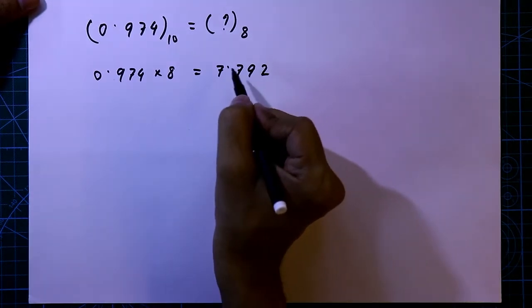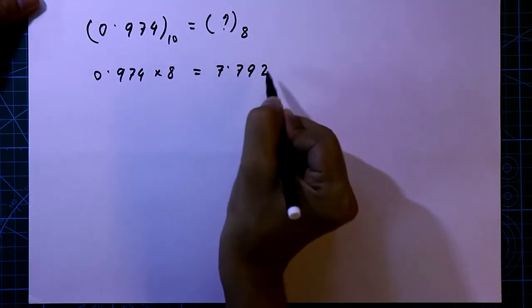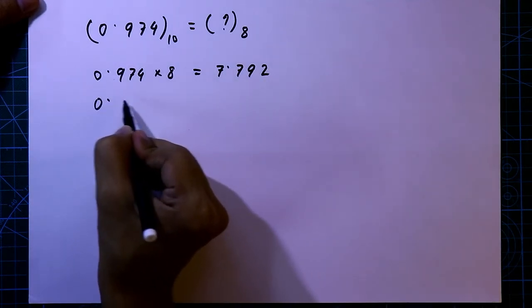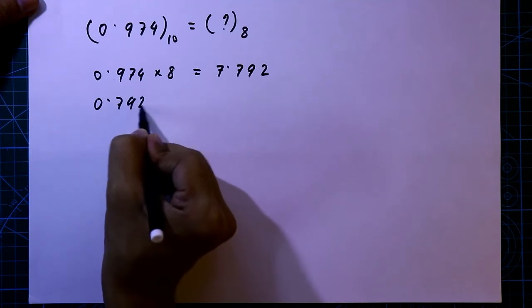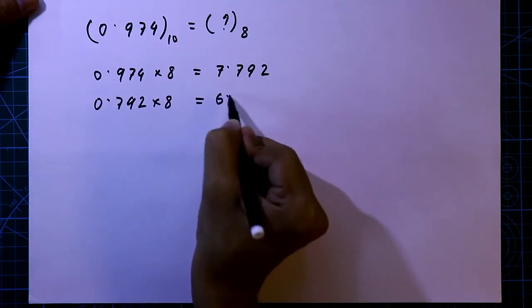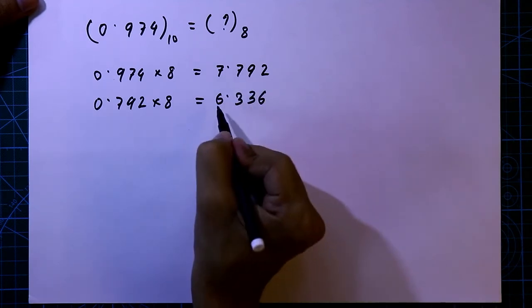Now ignoring the integer part, we will take 0.792. So 0.792 multiplied by 8, it is 6.336. Now again ignoring the integer part, we will take 0.336.